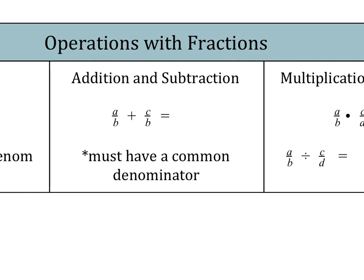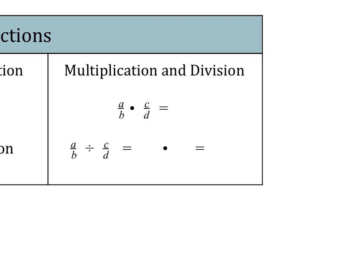To add and subtract, you need to have a common denominator before you add two fractions or subtract. Once you have a common denominator, you just add or subtract across the numerator — so this would be A plus C over B, noting that the denominator remains B. For multiplication, we multiply across the numerator (AC) and across the denominator. For dividing fractions, our first fraction stays the same and we multiply by the reciprocal of the second fraction. So C over D becomes D over C, giving us AD over BC.